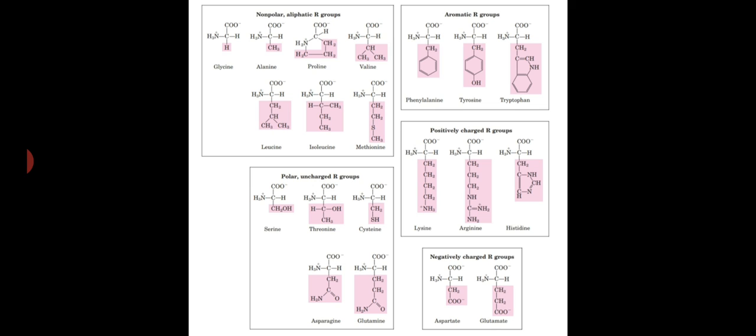Tryptophan and tyrosine, and to some extent phenylalanine, can absorb ultraviolet light. This property of these amino acids is therefore used by researchers in characterization of proteins.